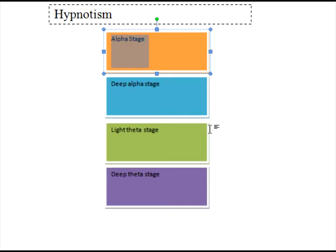That is how you will start entering into the alpha stage, which is the first stage of hypnotism. The alpha stage can be attained by anyone. You are mostly conscious; only to an extent do the negative thoughts go away, muscle relaxation happens, and the heart rate becomes normal. At the alpha stage you tend to relax, your muscles relax, and your heart rate goes down.